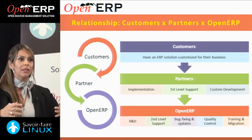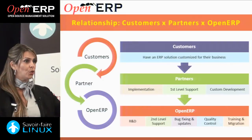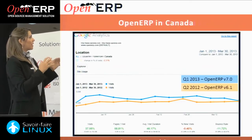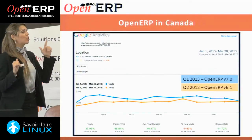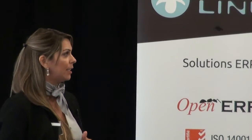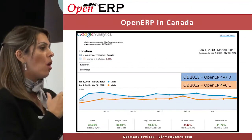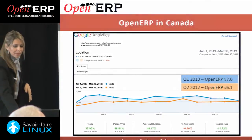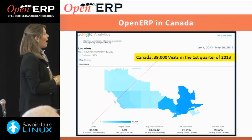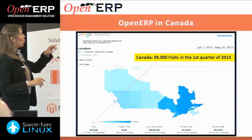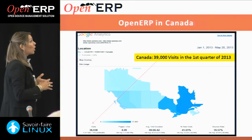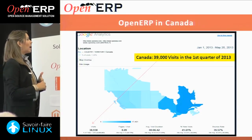The partner works directly with OpenERP, and we are responsible for all the R&D service, second level of support, bug fixes, upgrades, migration, and the maintenance of the software itself. We don't work directly with the end users — the companies. We work with our partners, and the partners are the ones who will be implementing and getting in touch with the end users.